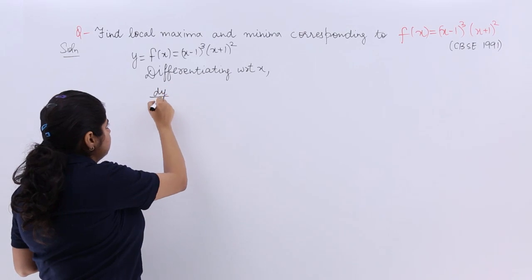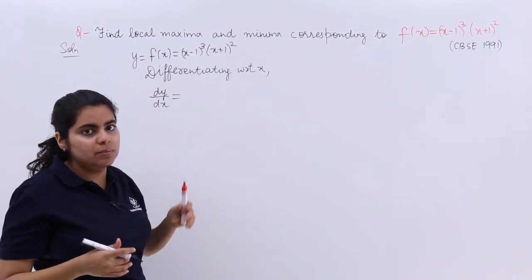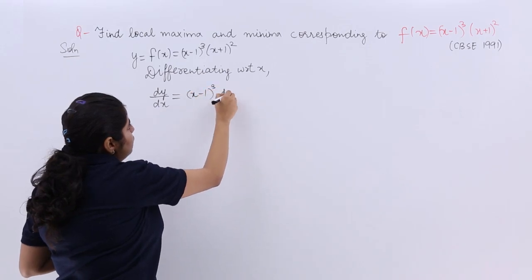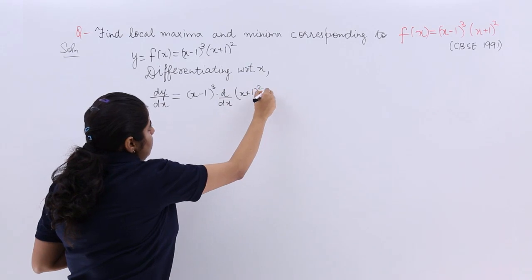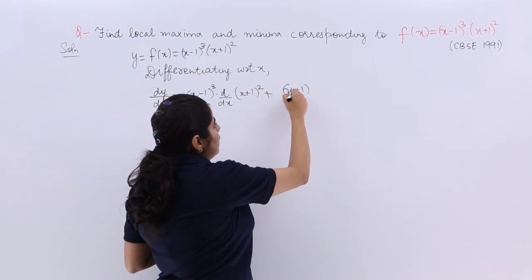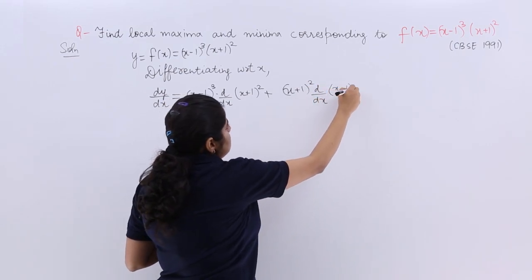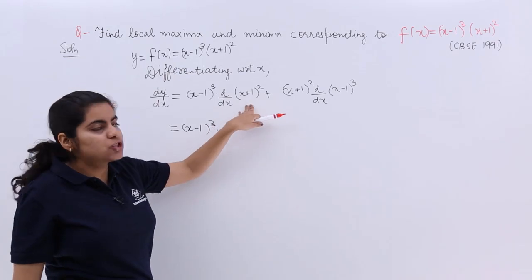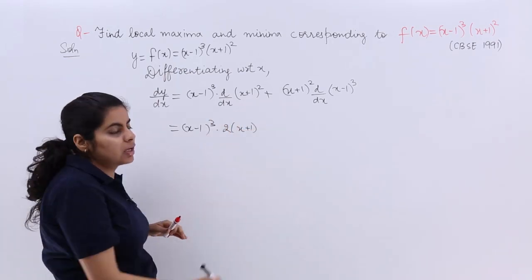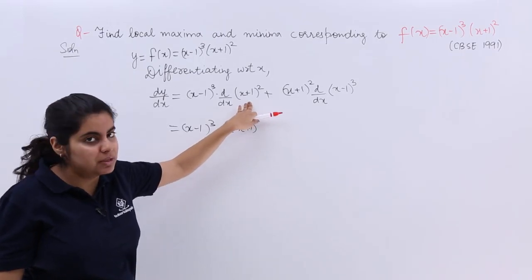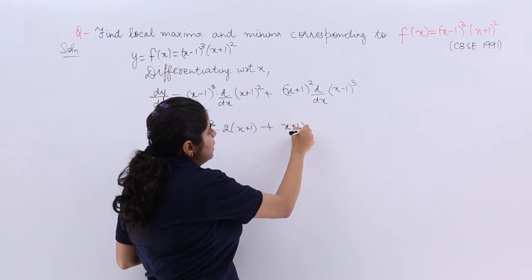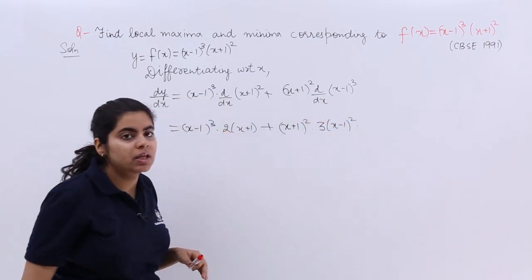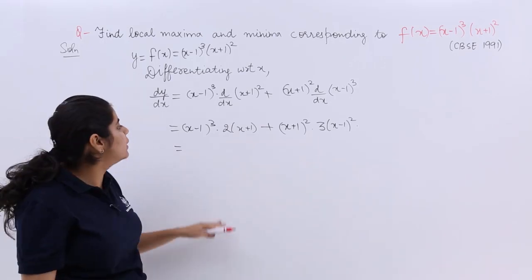dy/dx: it is the product of two terms, so we have to carefully apply the product rule. Leave the first term (x-1)³ as it is and differentiate (x+1)², which gives 2(x+1). Plus, leave (x+1)² as it is and differentiate (x-1)³, which gives 3(x-1)² by the power rule. The differentiation of (x+1) gives 1, so we get: (x-1)³ · 2(x+1) + (x+1)² · 3(x-1)².